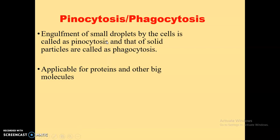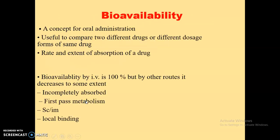Pinocytosis and phagocytosis: a very small amount of drug gets absorbed by these mechanisms. Pinocytosis means engulfment of small droplets by the cell itself, whereas engulfment of solid particles by the cell is called phagocytosis. These mechanisms are applicable for proteins and other large molecule drugs.